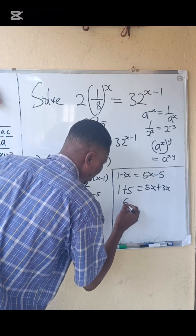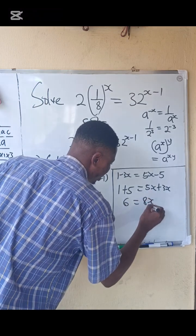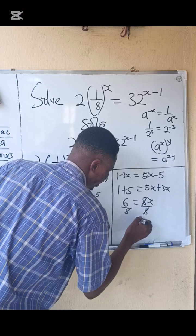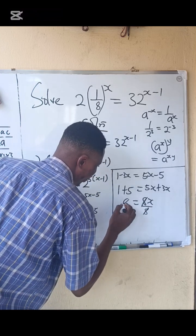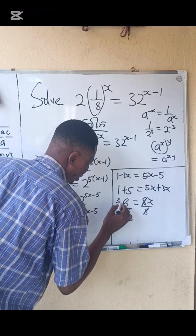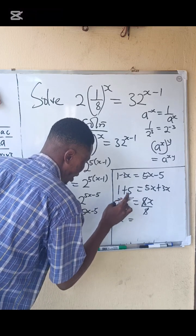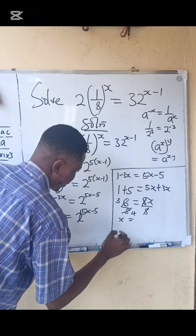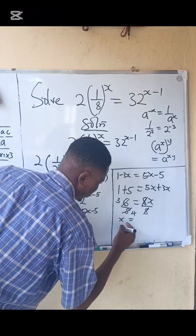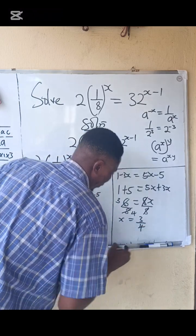So this becomes 6 equals to 8x. Divide both by 8. So we now have that x equals to 6 over 8. We simplify: 2 cancel 6 three times, 2 cancel 8 four times. So we have that our answer x equals to 3 over 4.